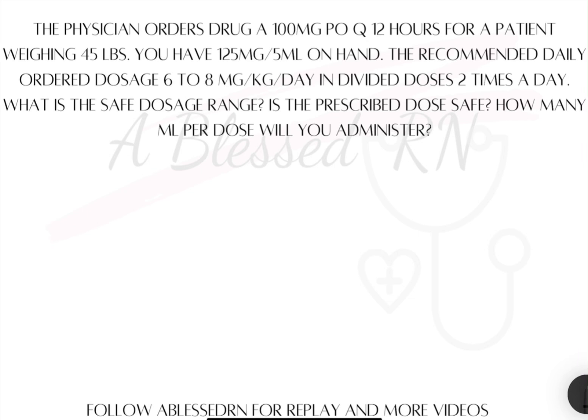The physician orders Drug A, 100 milligrams by mouth every 12 hours for a patient weighing 45 pounds. You have 125 milligrams per 5 milliliters on hand. The recommended daily dosage is 6 to 8 milligrams per kilogram per day in divided doses two times a day. What is the safe dosage range, and is this prescribed dose safe? How many milliliters per dose will you administer?